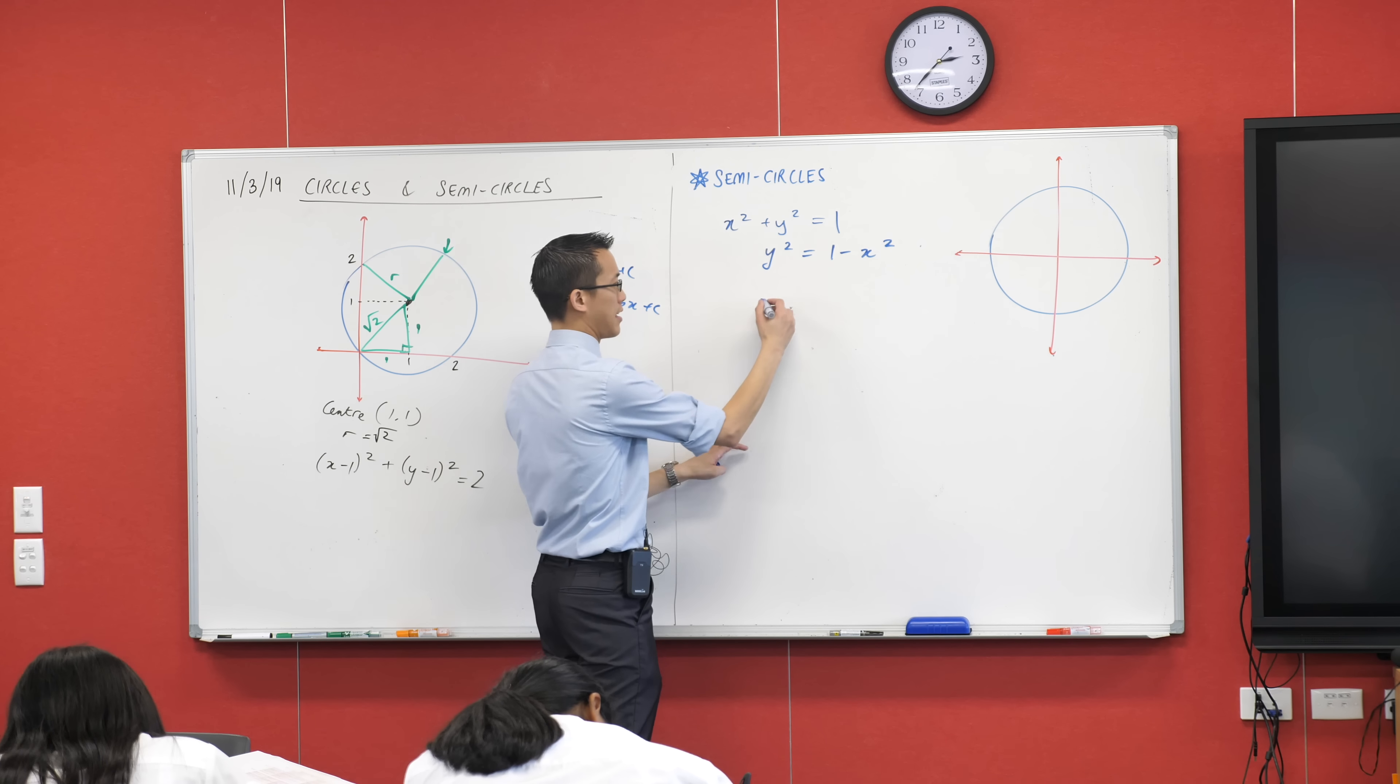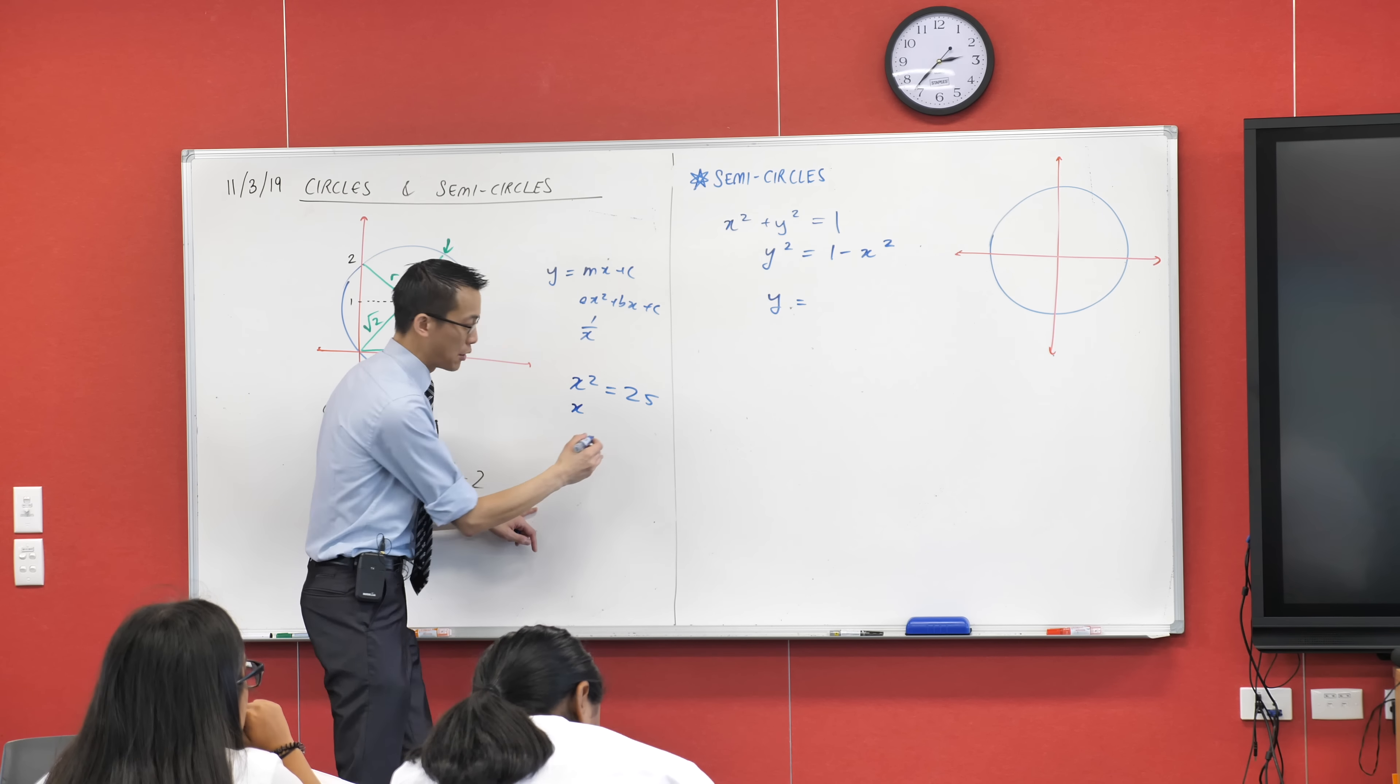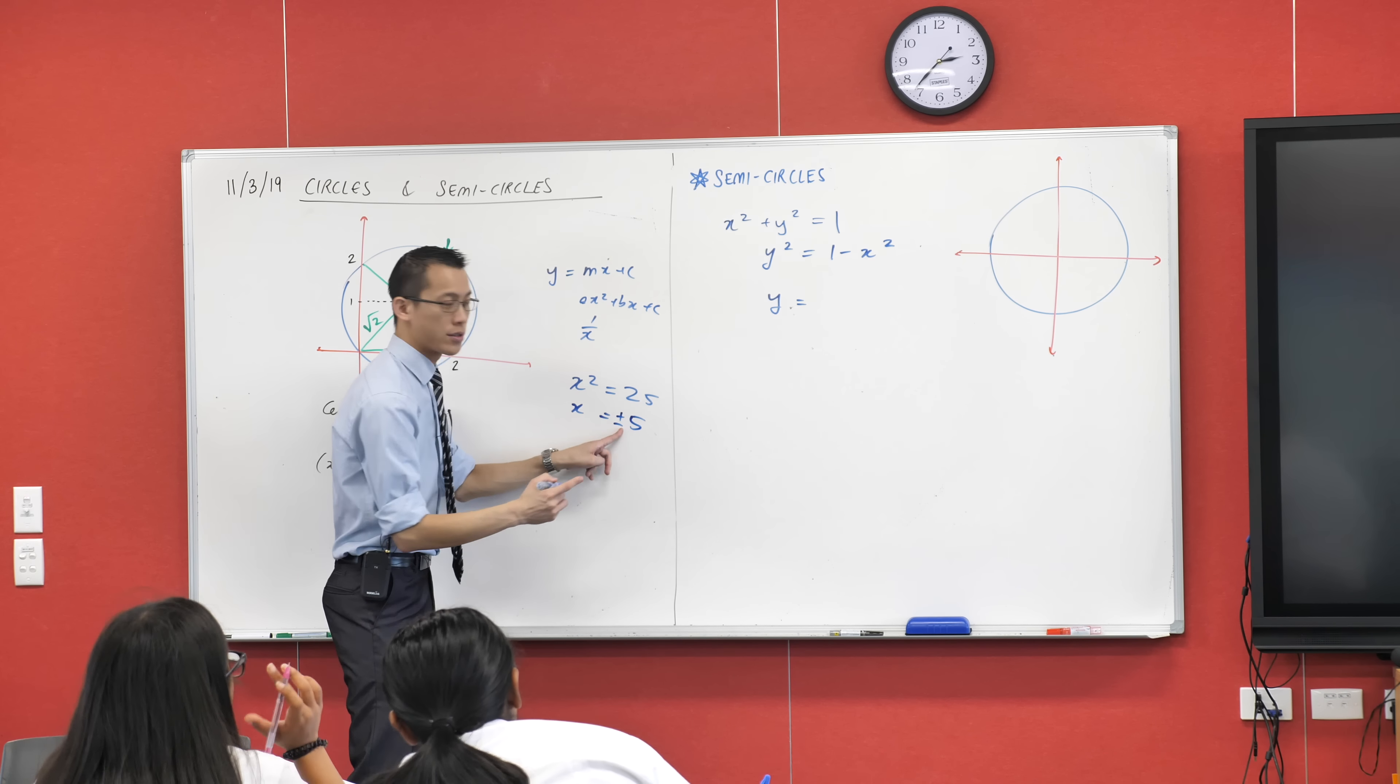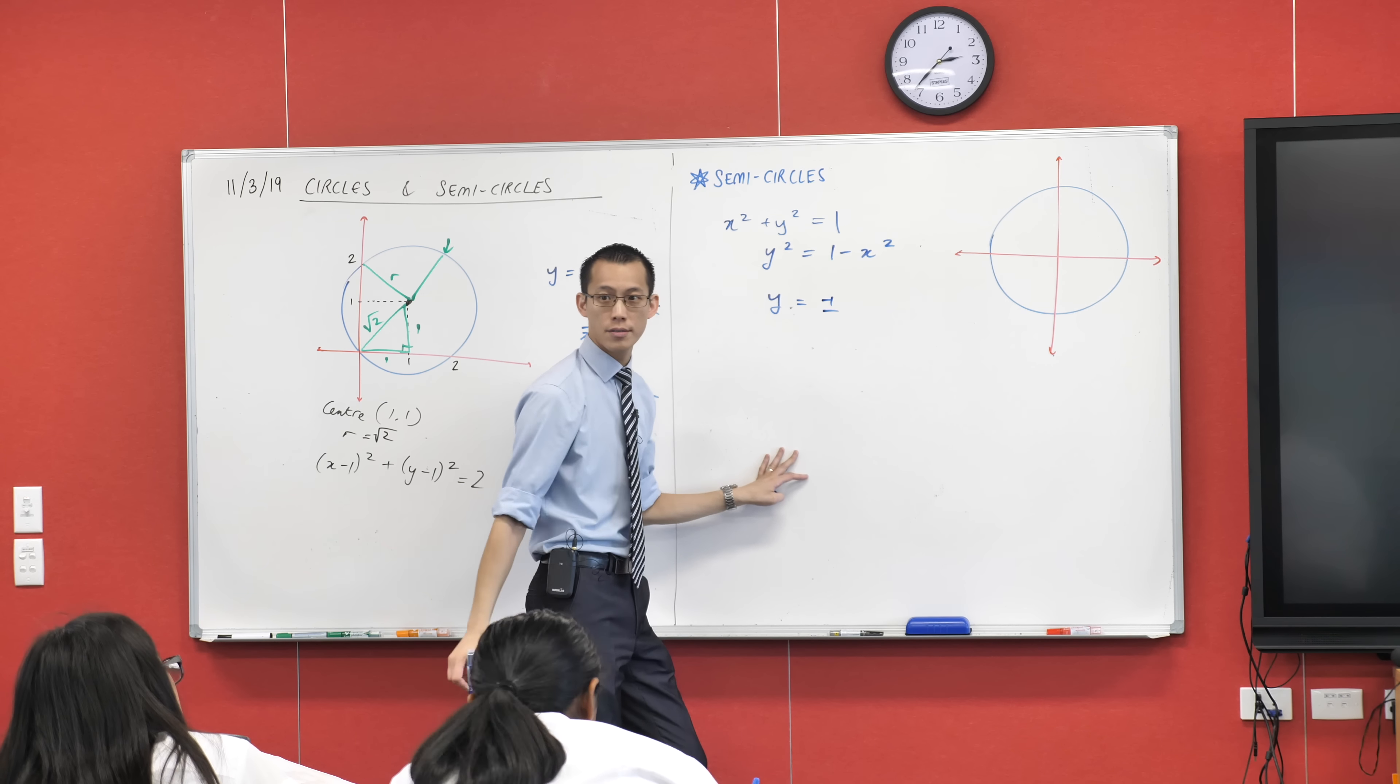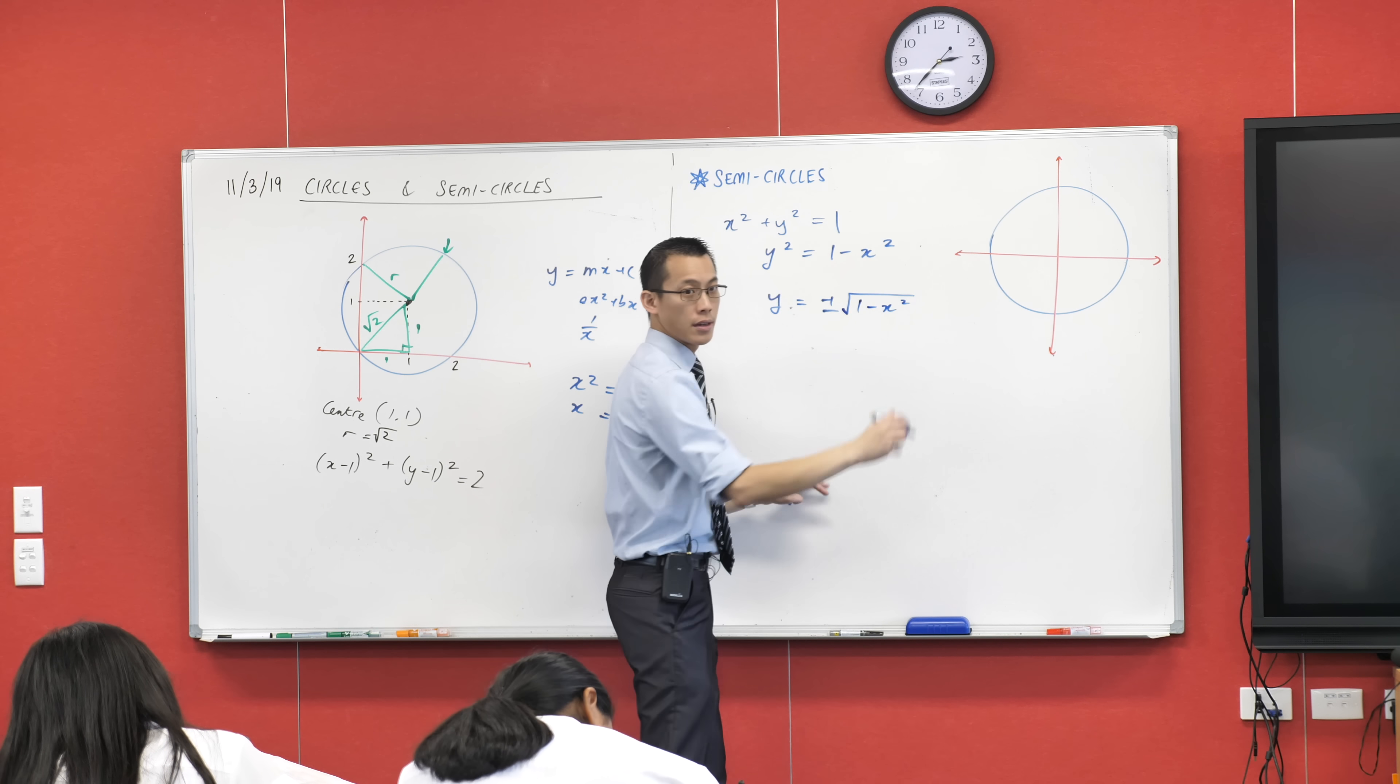Just be cautious with this next bit. If you had a question like x squared equals 25, you can take the square root on the left-hand side, but you don't just write a single number on the right-hand side. It's not just 5, it's plus or minus, because both of those can get squared to give you 25. Same thing applies here. So I'm going to write plus or minus square root of 1 minus x squared.